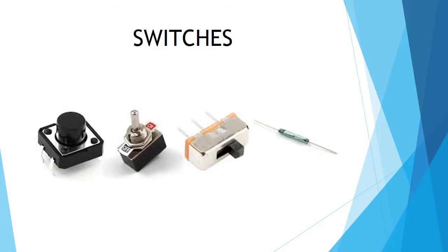The next components are switches. The first one is actually a button — when the button is up the circuit is off, and when you push it down it closes the circuit. Then we have a toggle switch, which you just toggle on and off. There's also a slide switch, which you slide back and forth to open and close the circuit. And finally a reed switch, which uses a magnet to open and close the metal contacts inside. The schematic symbol for a switch shows two connections, and when there's a break between them it's open; when a line connects them, the switch is closed and the circuit is on.